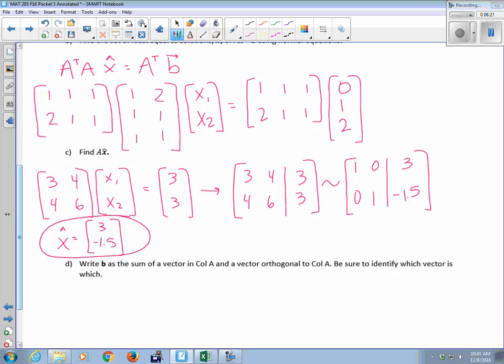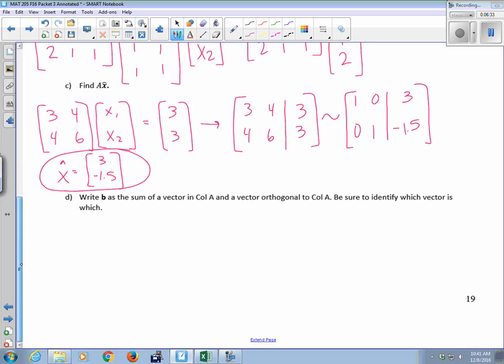So A times X hat doesn't give me B, because there's nothing I can multiply A by and get B. But A times X hat should get me really close to B. So let's see what happens when I multiply A times X hat. So A, 1, 1, 1, 2, 1, 1. Times the X hat I just found. I get 0, 1.5, 1.5.